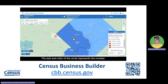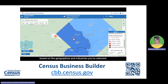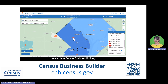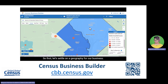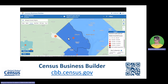Census Business Builder allows you to create reports based on the geographies and industries you've selected. These reports provide all of the variables available in the Census Business Builder — not just those on the dashboard — including information about similar businesses in your industry, which could help guide your business decisions. Looking at the map, Arlington County, Virginia seems like a strong candidate because it has a high percent of population over 21 with a higher income level.